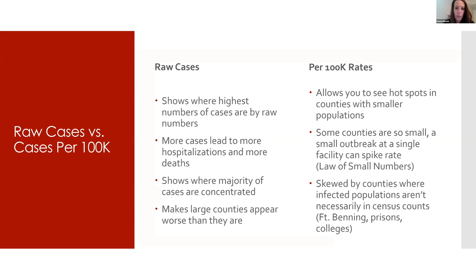In response to a question, Kelly explains that hospital regions are a Georgia state designation — that's how the state presents hospital numbers, so she just captured their defined regions. Hospitalization data is only available at the regional level, not county level: for example, Region D is Fulton, DeKalb, and Gwinnett. The regions are somewhat arbitrary and she's not entirely sure how Georgia defined them.